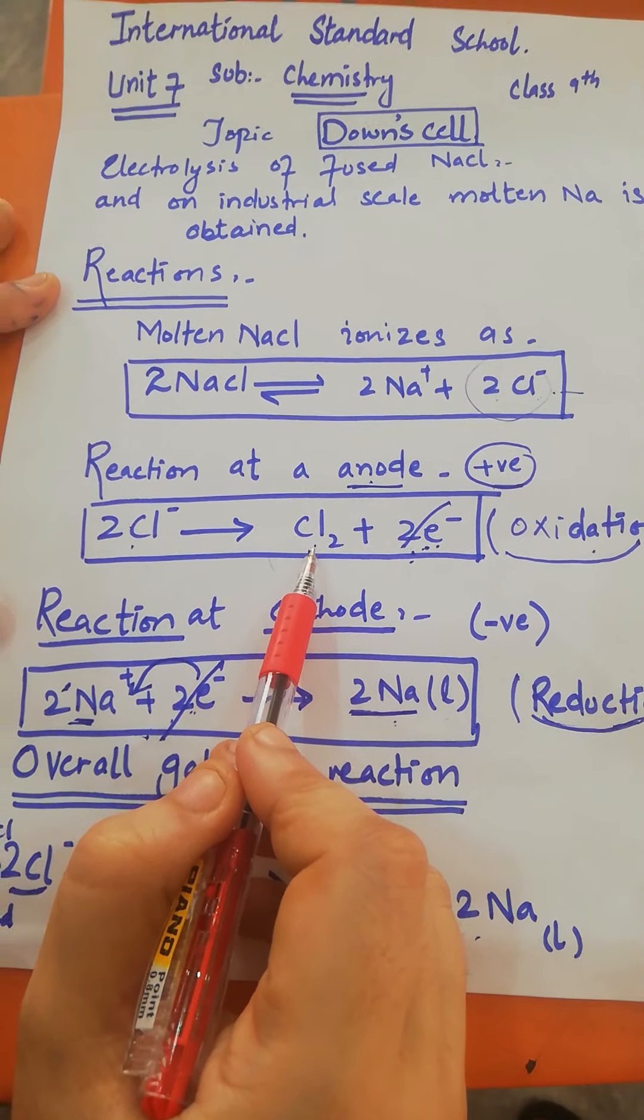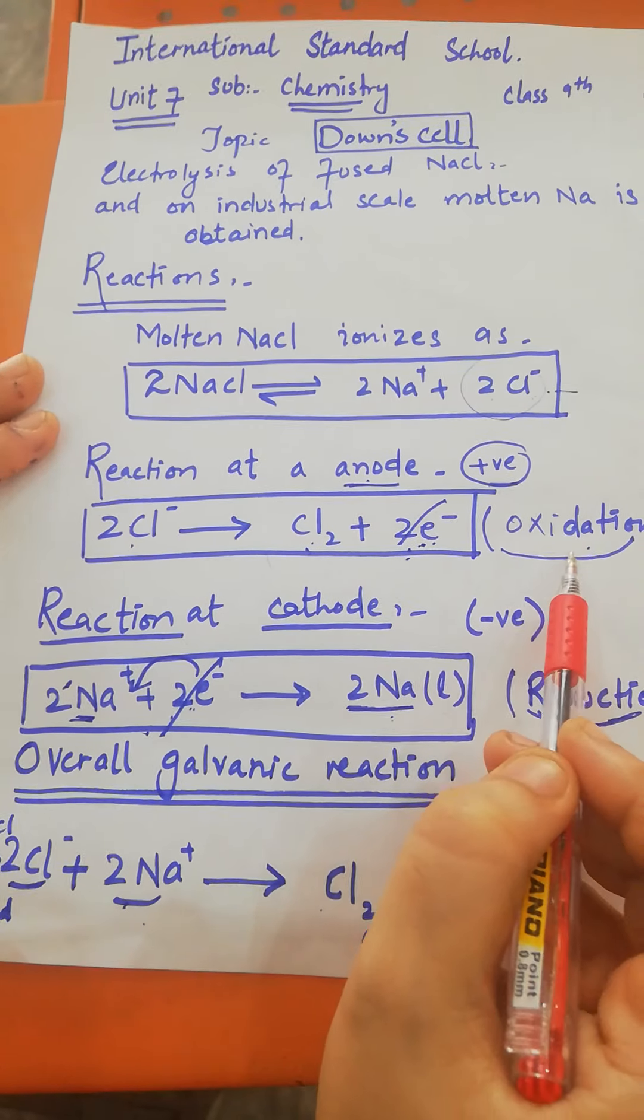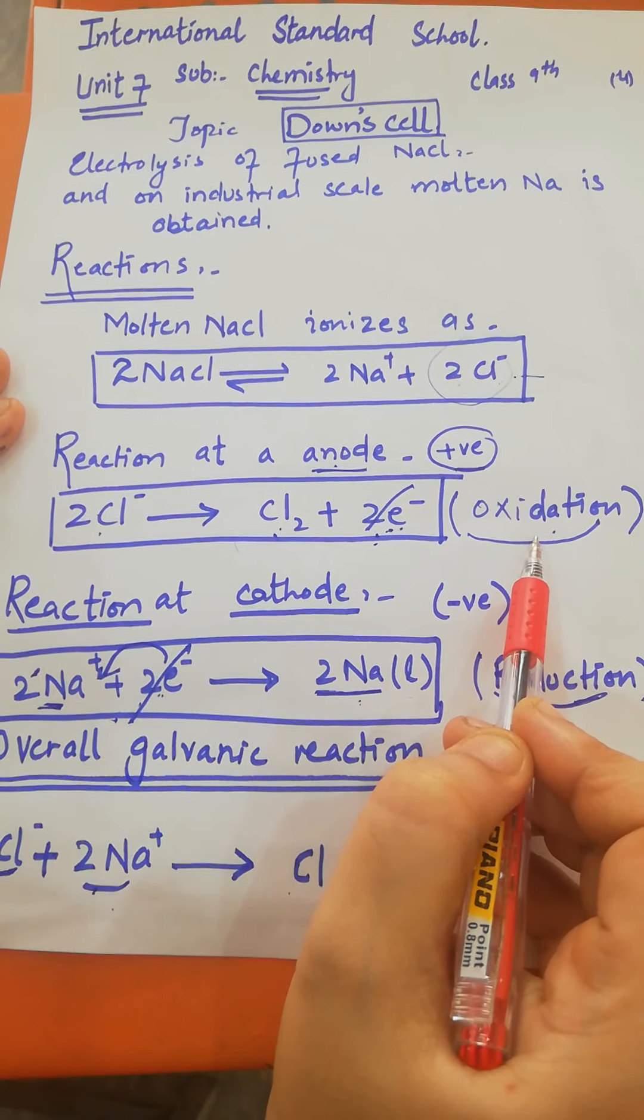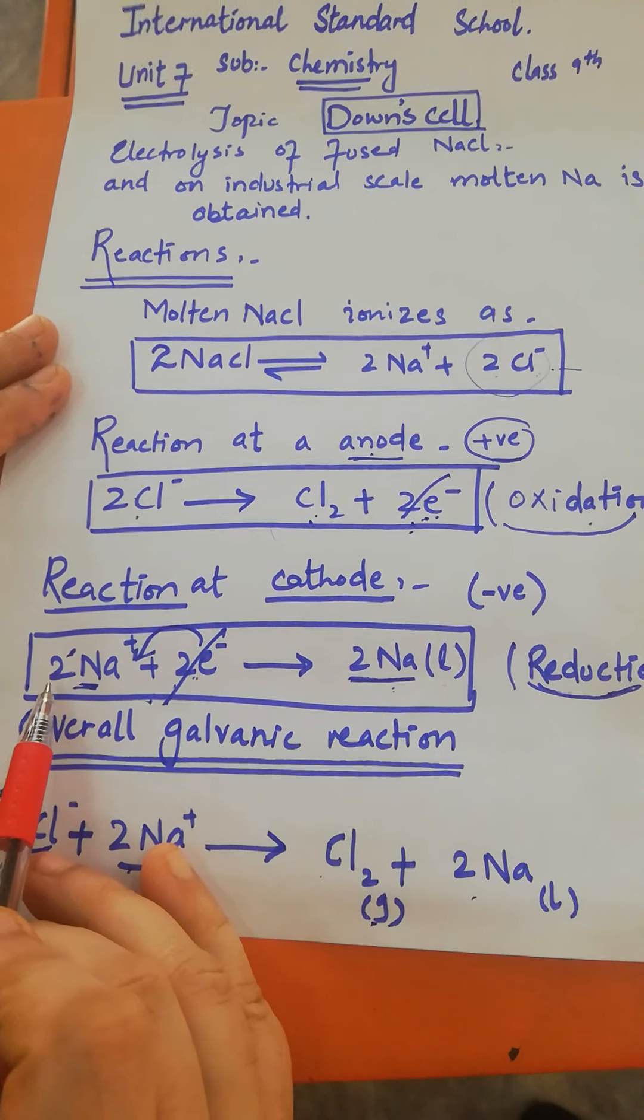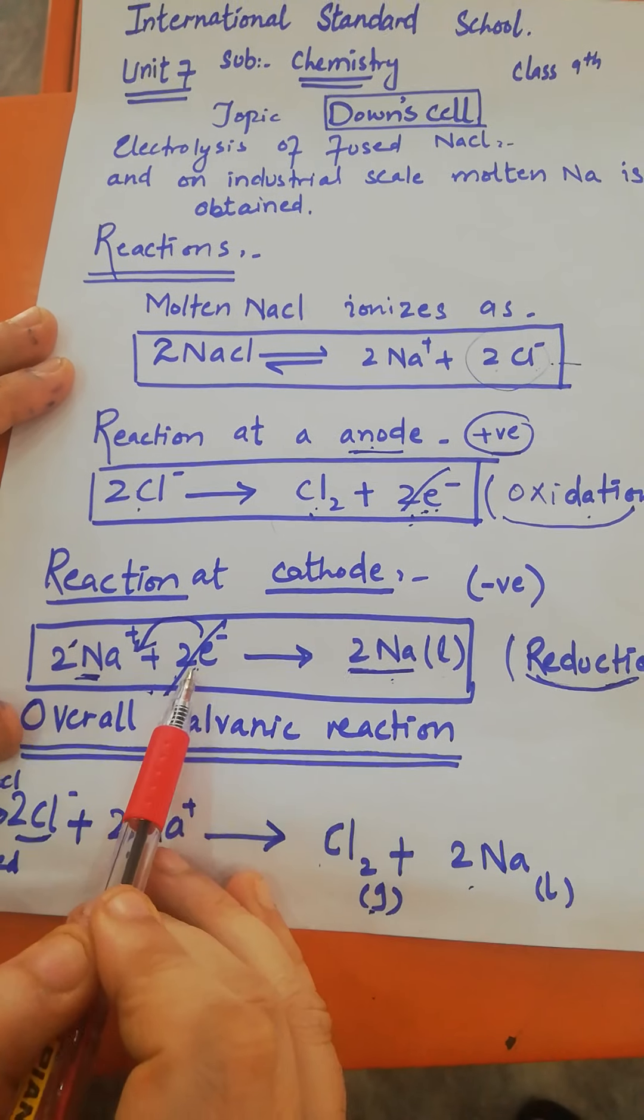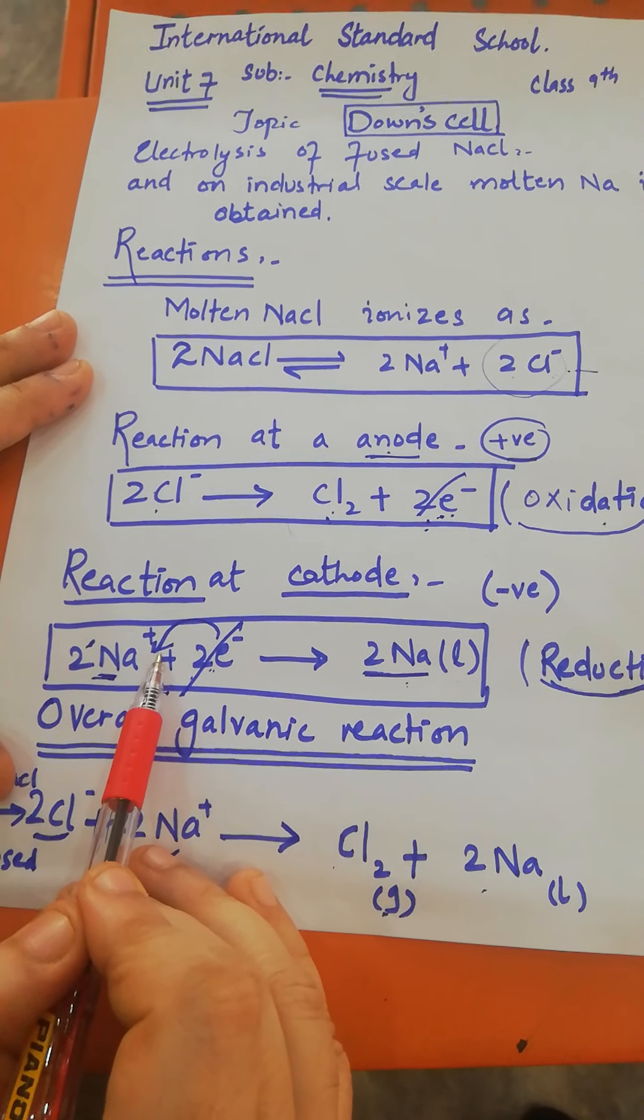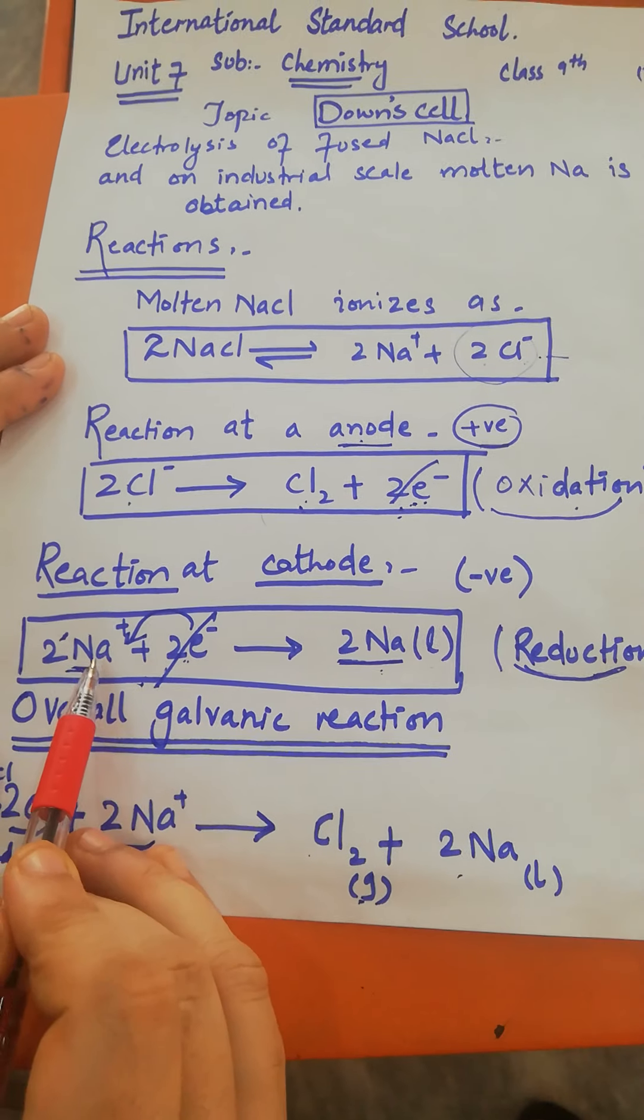Chlorine gas forms through oxidation. Sodium ions move towards the cathode. At the cathode, the ions gain electrons in a process called reduction, and they reduce to sodium metal.